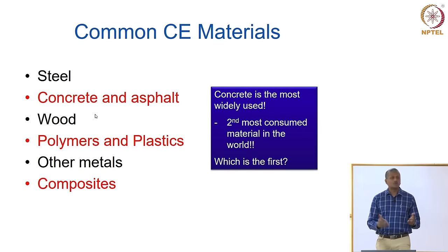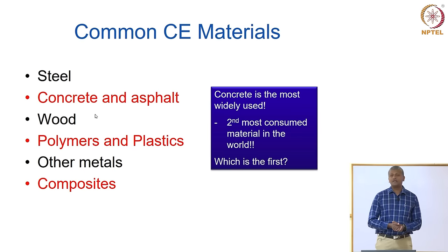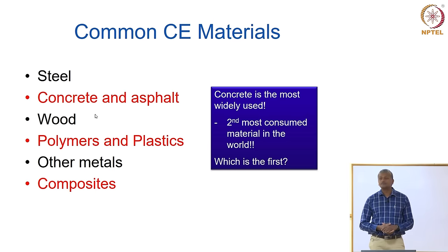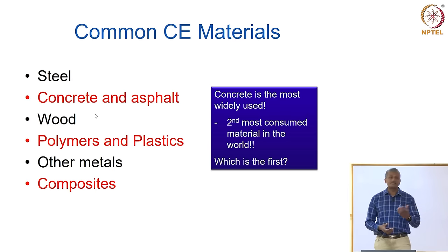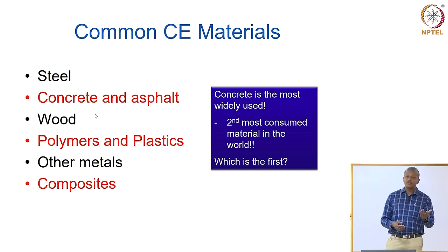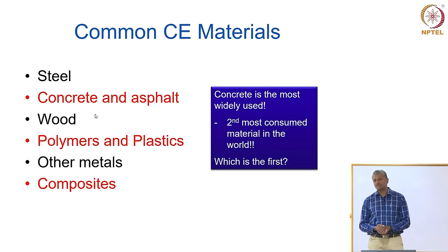There are several different types of civil engineering materials available today. Common ones being steel, concrete, asphalt, wood, polymers and plastics. You also have other metals like aluminium and copper used in construction. Today we are talking a lot about using composite materials, which were earlier used in aeronautical and mechanical engineering, and are now starting to be used in civil engineering as well.